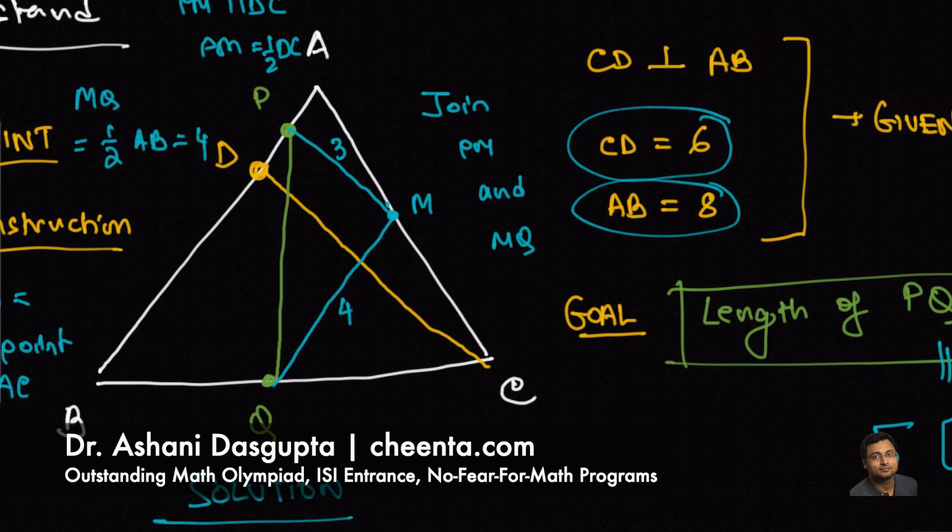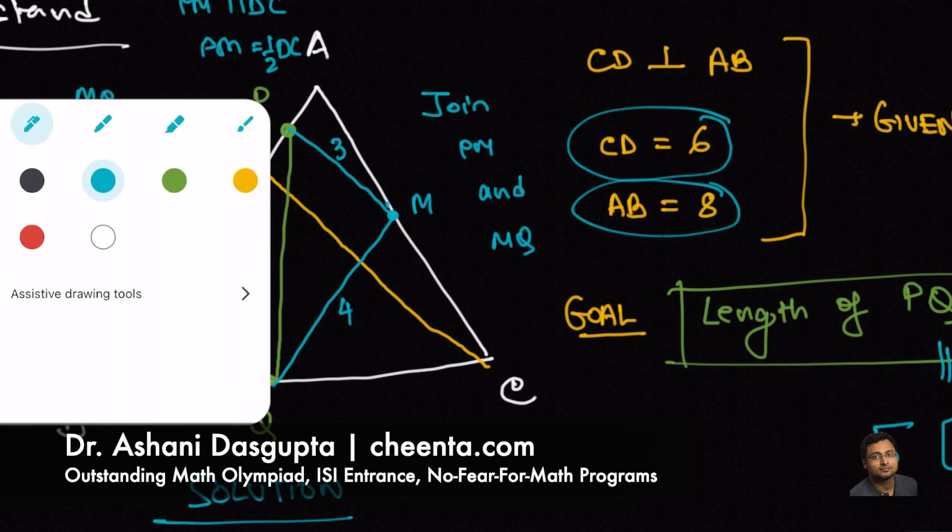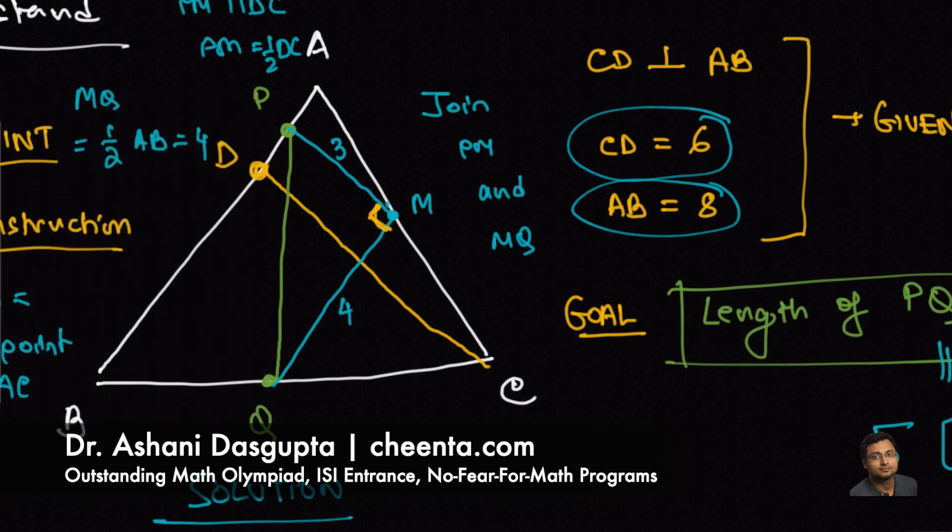We know that PM is parallel to DC. We know that MQ is parallel to AB. From that, we can conclude that this angle is 90 degrees. This is a little homework that I'll give you. Tell me in the comment why you think that we can conclude that PM is perpendicular to MQ from the information that PM is parallel to DC and MQ is parallel to AB. It's a very simple but beautiful idea.